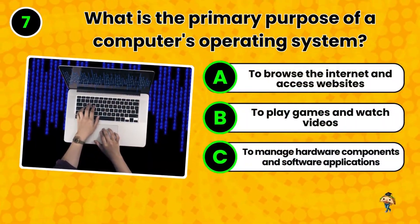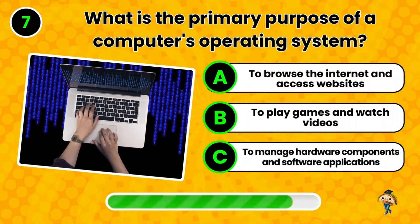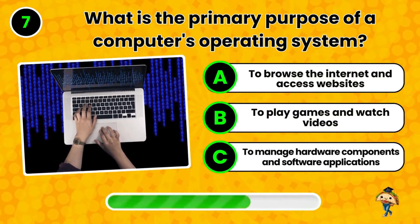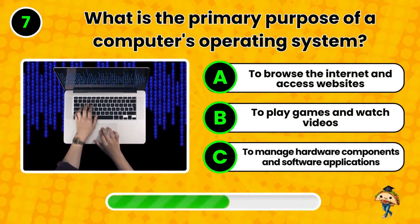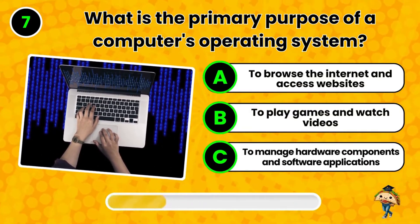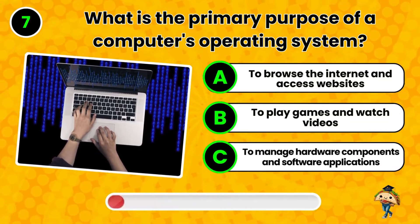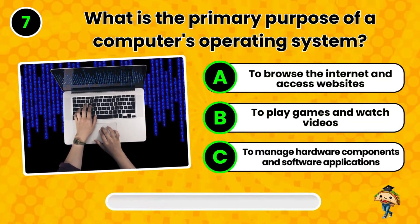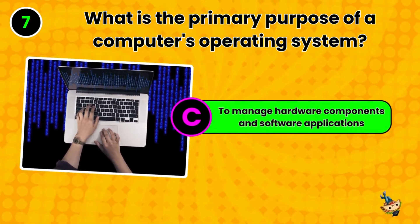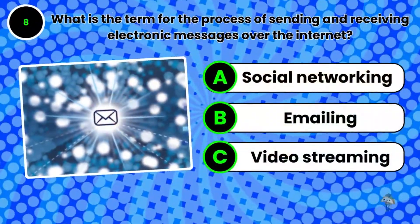Question 7. What's the primary purpose of a computer's operating system? To manage hardware components and software applications. That's right. Next question.